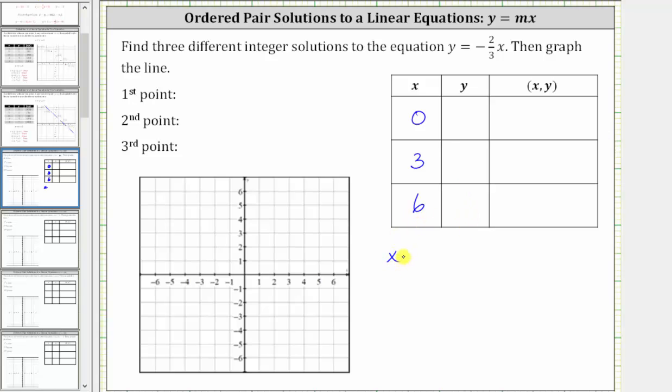So when x is zero, y is equal to negative 2/3 times zero, which is zero. The ordered pair zero comma zero is a solution to the given equation.